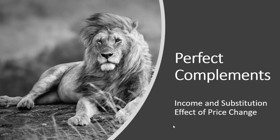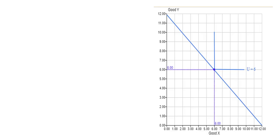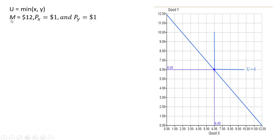In this video we're going to look at the income and substitution effect of a price increase when a consumer has a perfect complements utility function. Here's a consumer's utility: the minimum of x or y. The consumer has $12 of income. The price of good x is $1, and the price of good y is also $1. Forming the budget constraint, we have 12 equals x plus y, where the coefficients on x and y represent the respective prices.